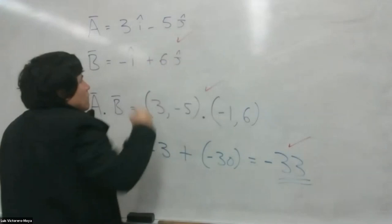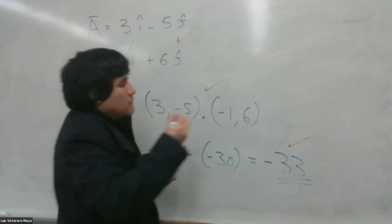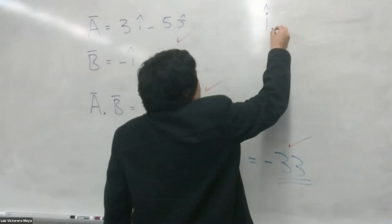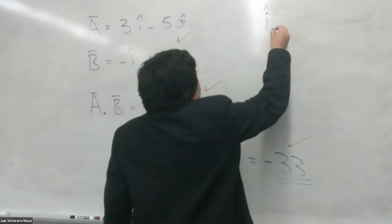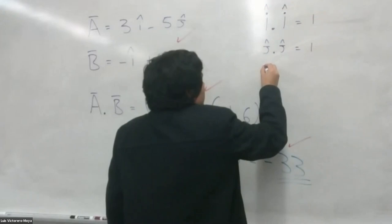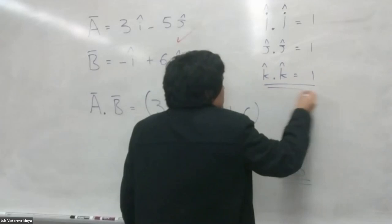From this, we can also note that the unit vector i dot unit vector i equals 1, and the same holds for j·j and k·k, where k is the unit vector for the z-axis.